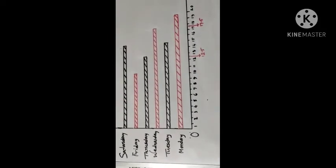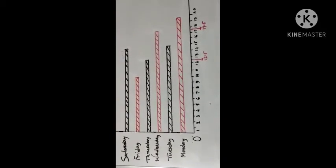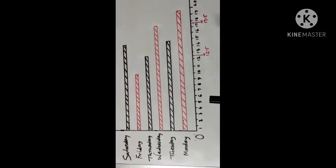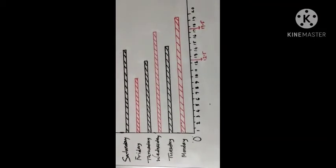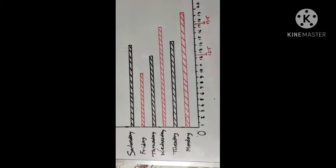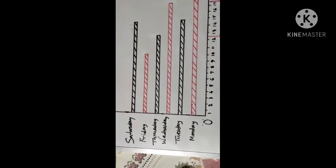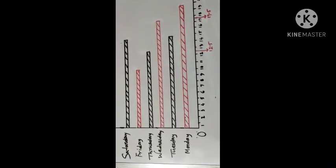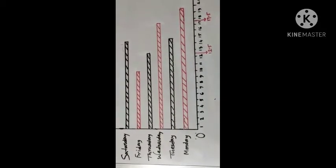From the diagram, we can easily understand: Number 1, on Monday, the maximum number of bags are sold because the length of the rectangle for Monday is the longest. Number 2, on Friday, the least number of bags are sold because the length of the rectangle for that day is the smallest.